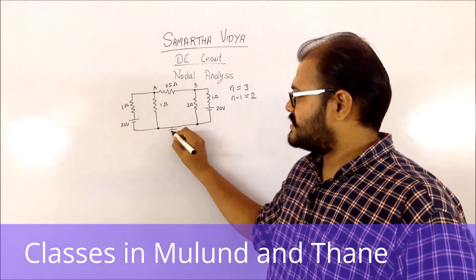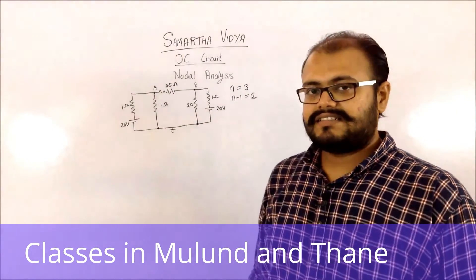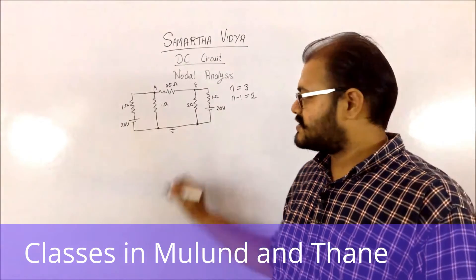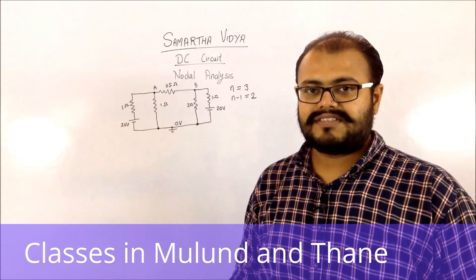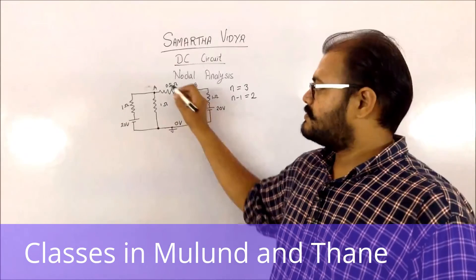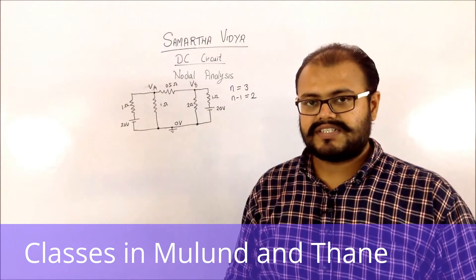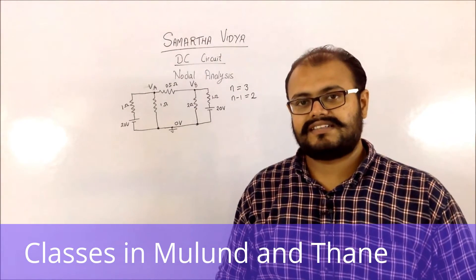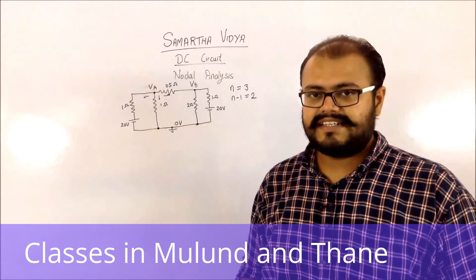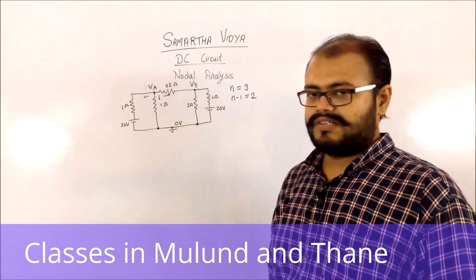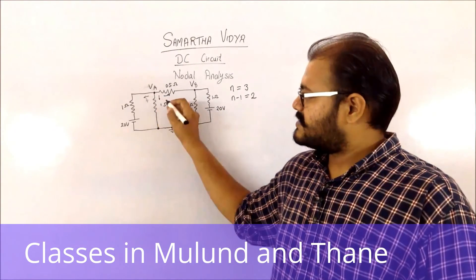For simplicity, we will assume this particular node is the reference point — it is grounded. We now consider the voltages at the different nodes. Since this is the reference point, it has zero voltage. At point A we assume the node voltage is Va, and at point B we assume it is Vb. In nodal analysis, Va and Vb are the variables for our equations. At each node, we assume currents flowing away from the node: I1, I2, and I3 flowing away from node A.